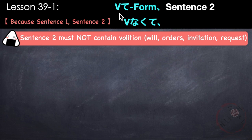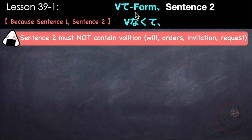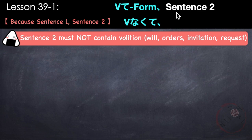The first pattern is giving a reason followed by the result or conclusion. We've learned in previous lessons how to use から when giving reasons. But this time, we will learn another way of giving reason using the te-form of the verb or adjectives. In Japanese, the reason comes first, followed by the effect, result, or conclusion.